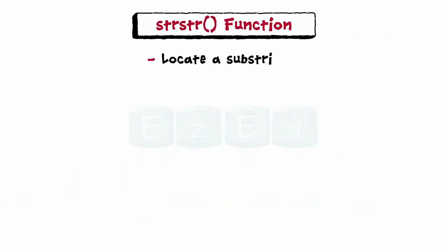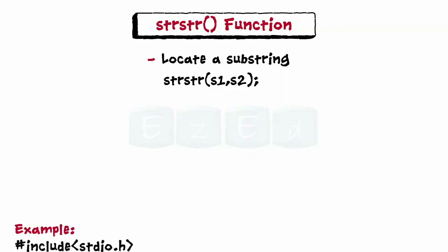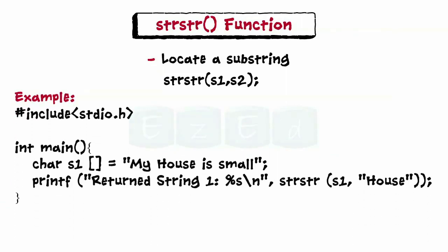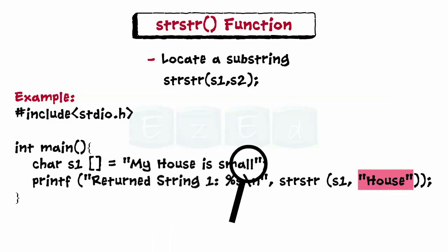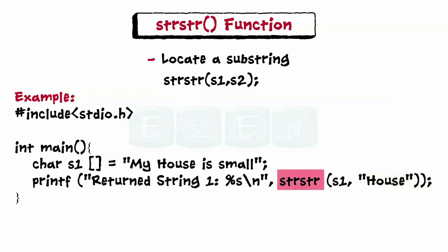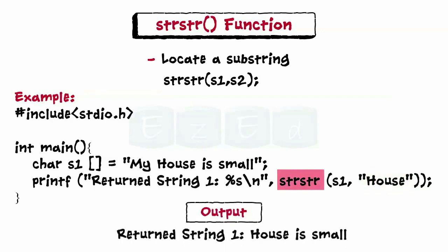strstr is used to locate a substring in a string — it is a two-parameter function that searches s1 for string s2. It returns a pointer to the string if found, otherwise it returns a null pointer. For example, in this program, the string 'house' is searched in the string s1, and using the strstr function produces the corresponding output.